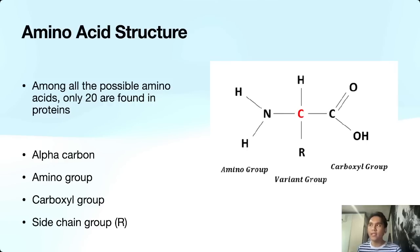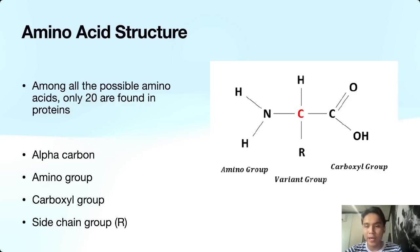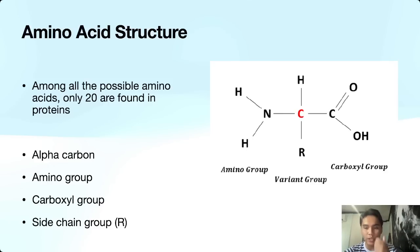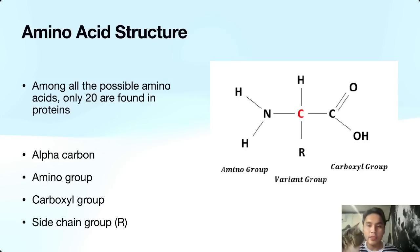Why are they called amino acids? The word 'amino' comes from the amino group, which is attached to the alpha carbon. The word 'acid' comes from the carboxyl group — carboxylic acid. So amino group plus carboxylic acid equals amino acid. Again, the alpha carbon is attached to four groups: the carboxyl group, the amino group, the hydrogen, and the variant group.